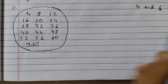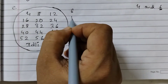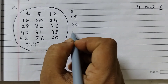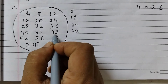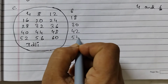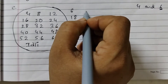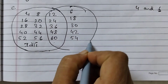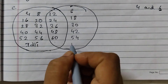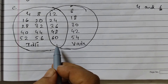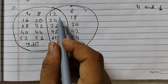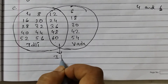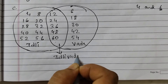Now the multiples of 6: 6, 12, 18, 24, 30, 36, 42, 48, 54, 60. We draw a circle here to show that these are the multiples of 6, so for these we would say vada. The common multiples are 12, 24, 36, 48, 60 — for these we will say idli vada.